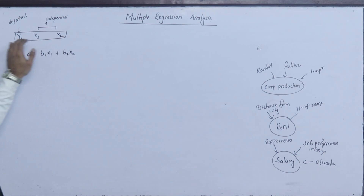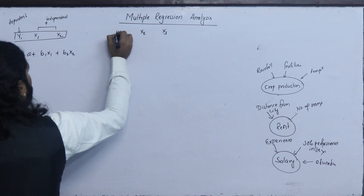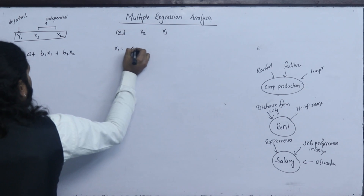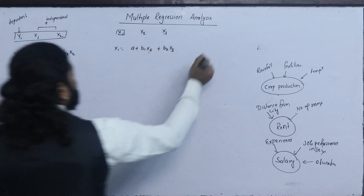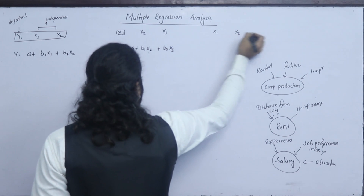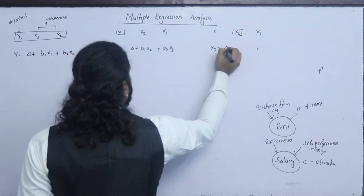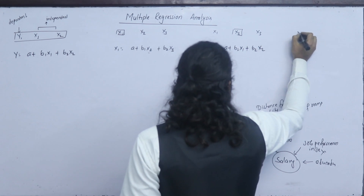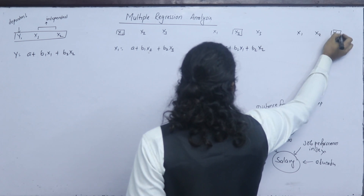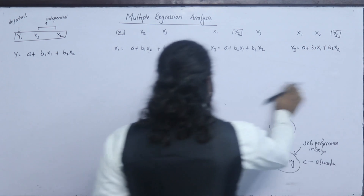If y depends on the relation between x1 and x2, y depends on this relation. Now the equation means we need to find the values a, b1, and b2. We have x1, x2, and x3. The equation is y equals to a plus b1 x1 plus b2 x2.